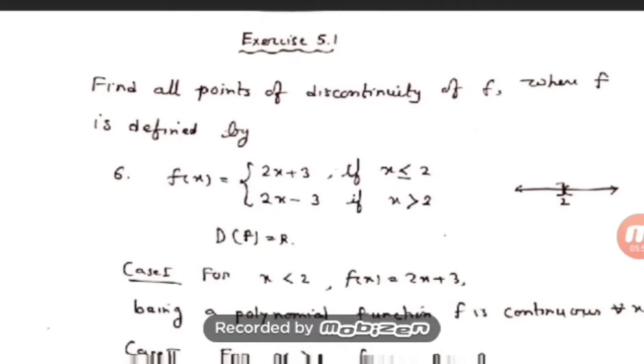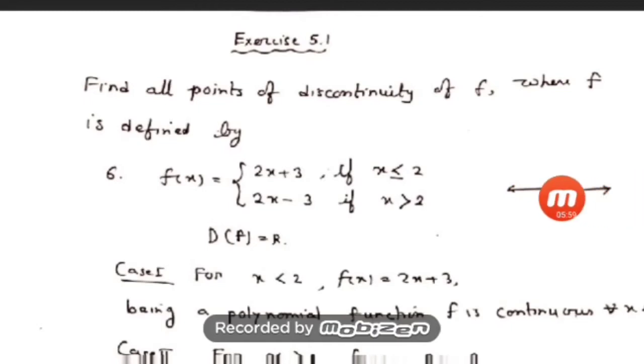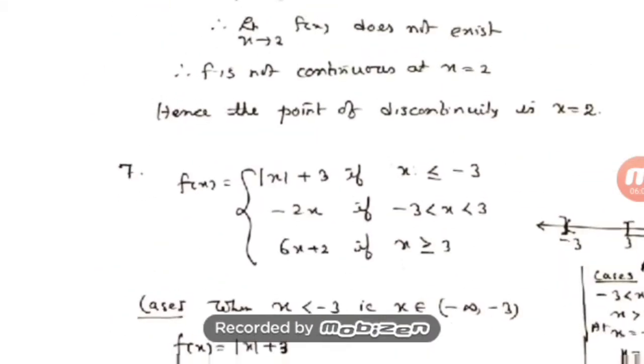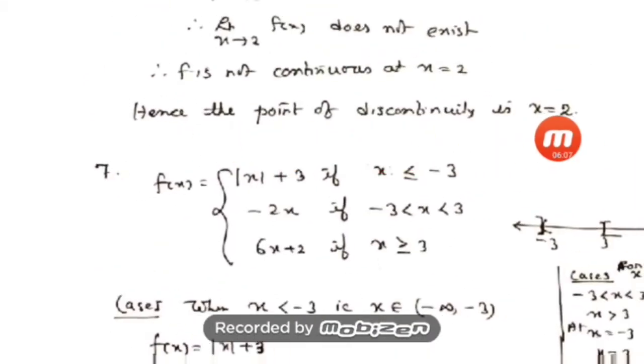Since the function is continuous for all x less than 2 and for all x greater than 2, it is continuous everywhere except at x = 2. Therefore, the point of discontinuity is x = 2.